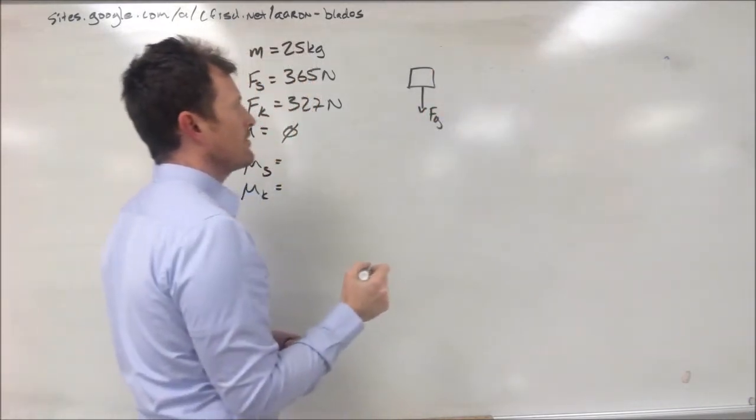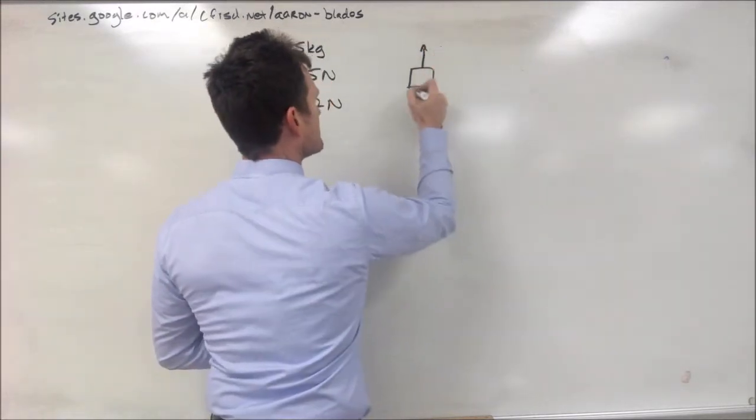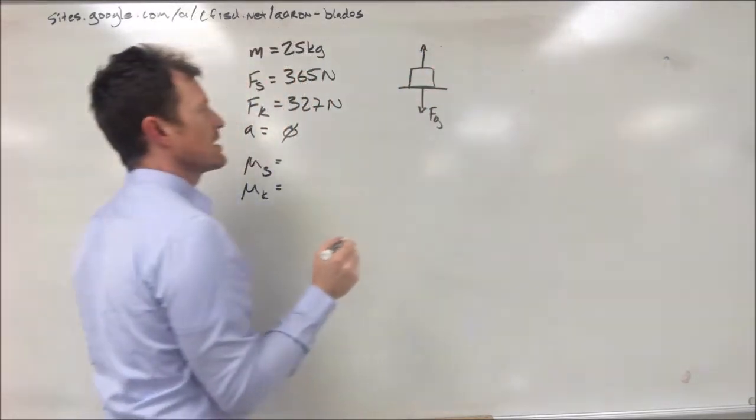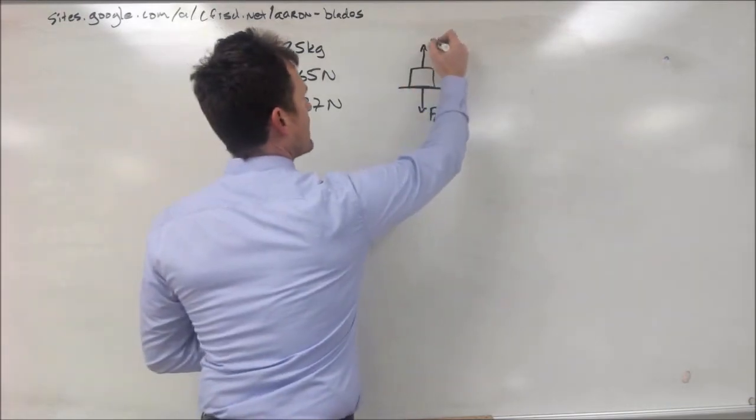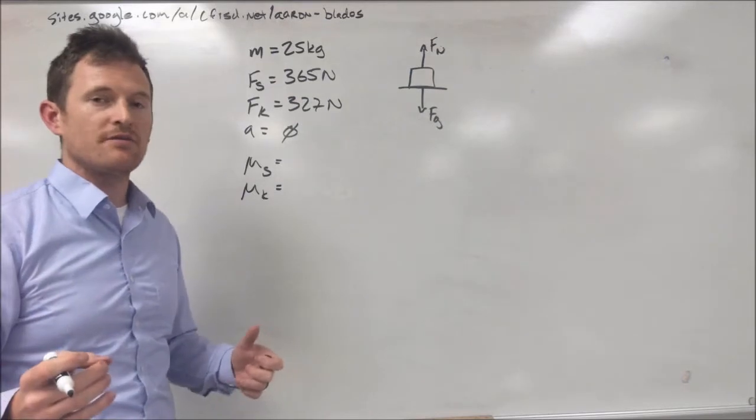Usually, we will have gravity pulling the object down, while at the same time, if the object is sitting on some surface, we have a normal force pushing back up. That's just to keep the object from falling straight through to the middle of the earth.